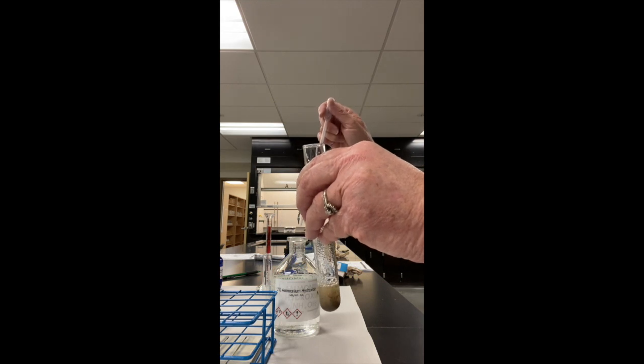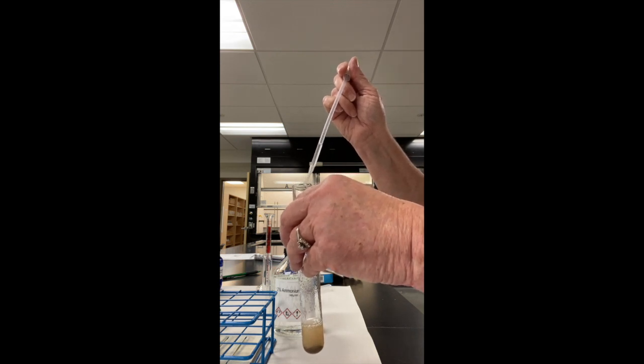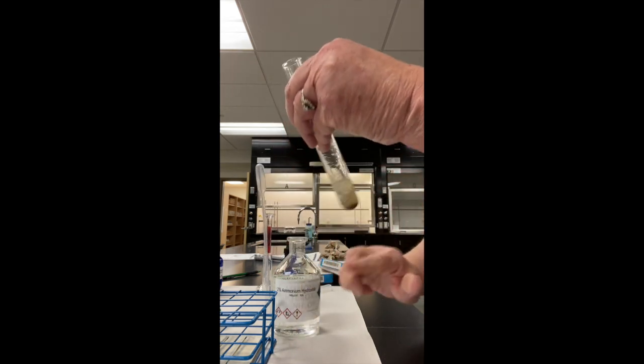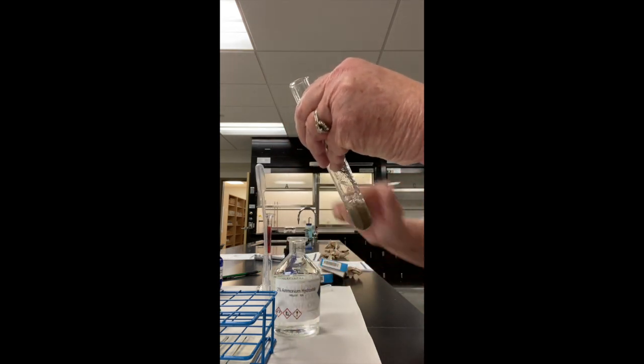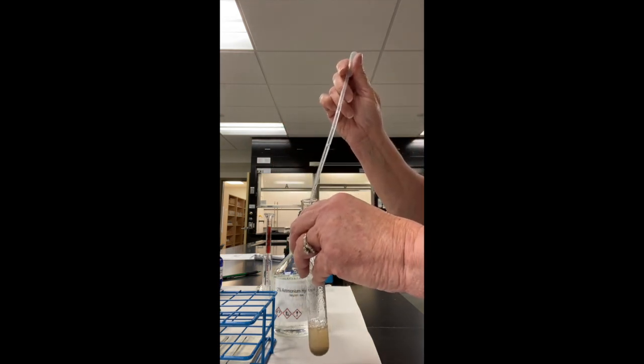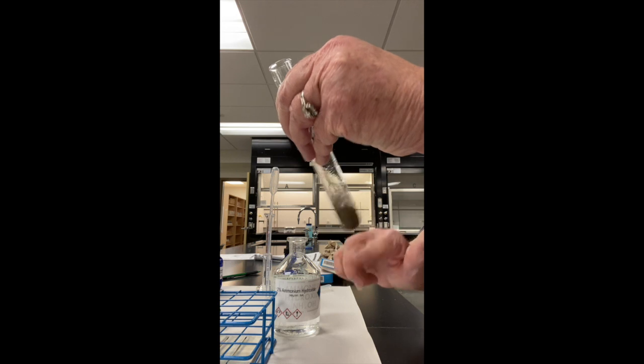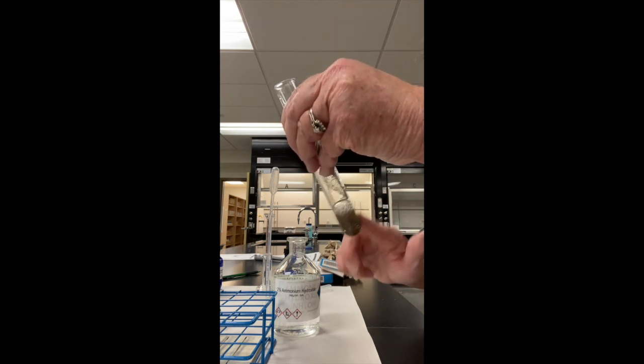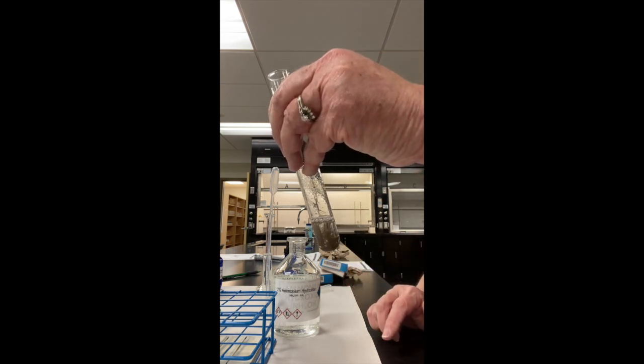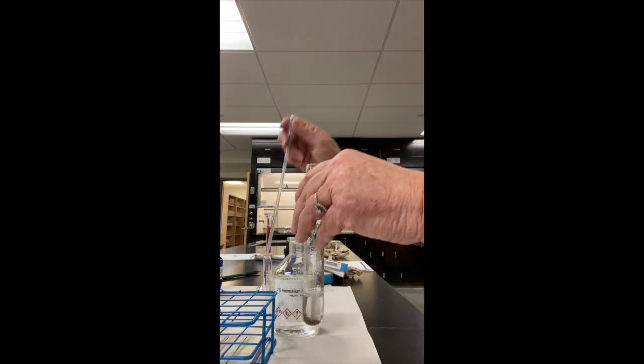The directions say add just enough ammonium hydroxide till the precipitate goes away. So I'm going to add a couple of drops. Let's mix that, see if it goes away. Not yet. I'm going to add a couple more drops. About five drops there I'd say. We've got a lot of the precipitate. Notice how it's going to the bottom, and then it's much more clear at the top. I'm going to go ahead and add about five more drops because I don't want to put too much in there.